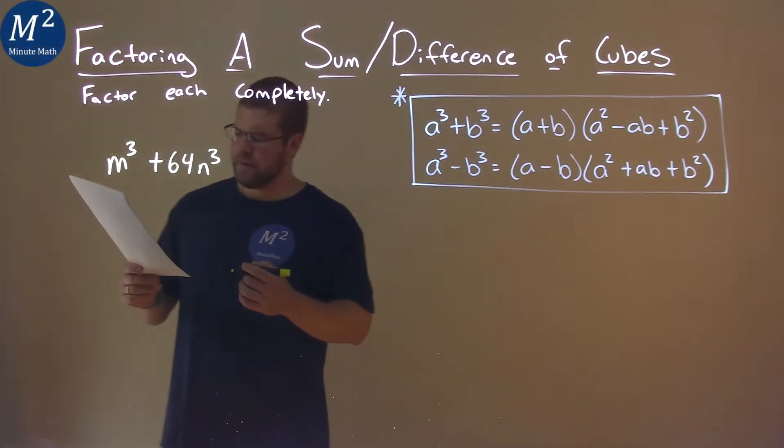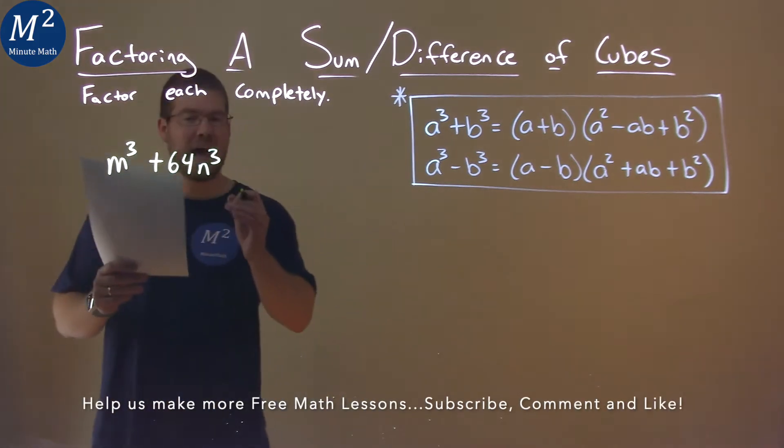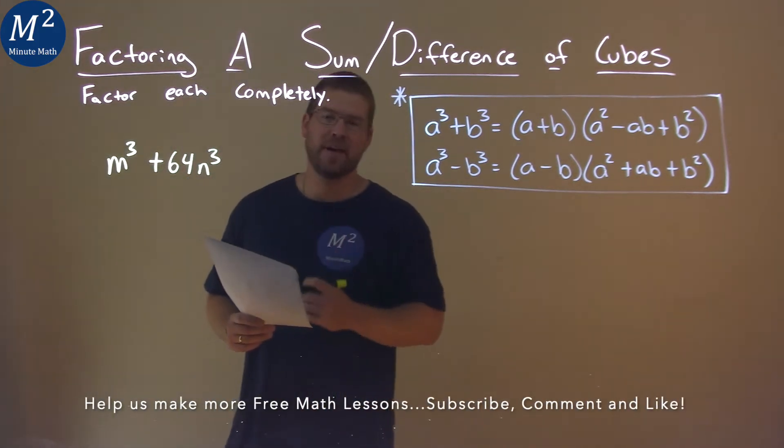We're given this problem right here: m to the third power plus 64 m to the third power, and we need to factor this completely.